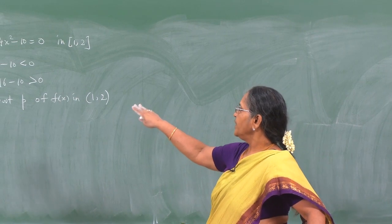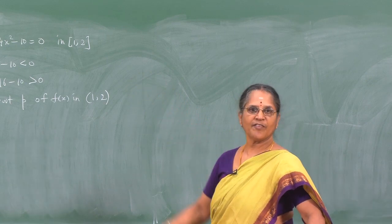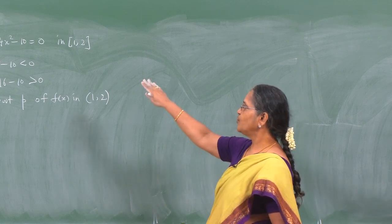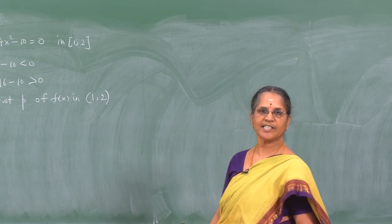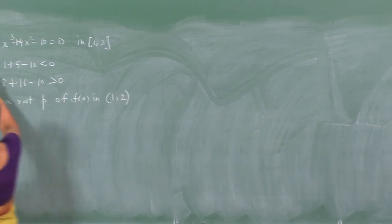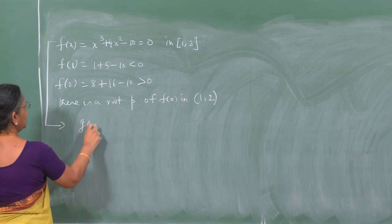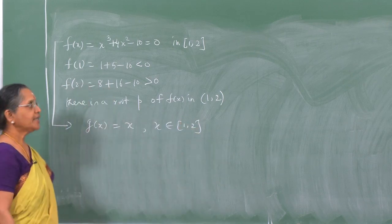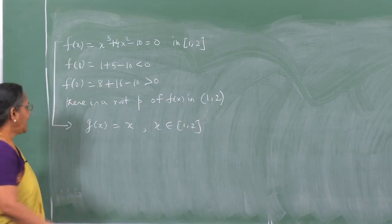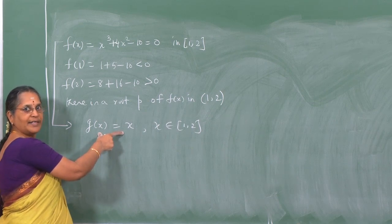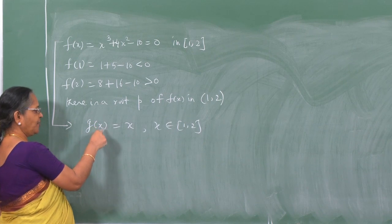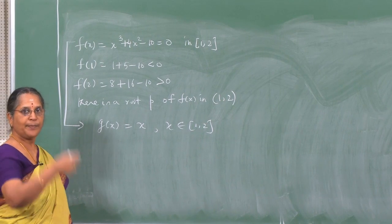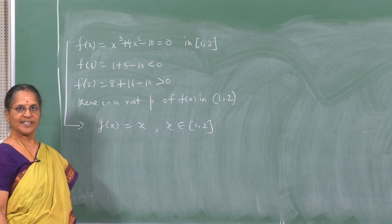Let us now relate the root finding problem to that of the fixed point iteration problem. If I have to connect this, I must write f(x) in the form g(x) = x for x in the interval [1, 2]. If I am able to do that, I have a fixed point problem, and I should be able to determine a fixed point p for this function, which can then be related to a root of f(x) = 0.